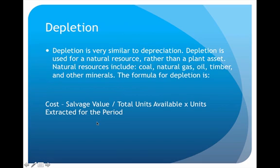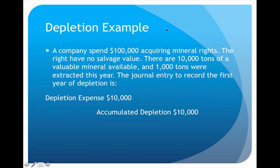To see this in an actual example: a company spends one hundred thousand dollars to acquire mineral rights — that's a natural resource — and it has no salvage value, which is common for natural resources. They estimate there are ten thousand tons of a very valuable mineral to extract and sell. In the current year they have already extracted one thousand tons. To calculate depletion: cost of one hundred thousand, no salvage value, divided by ten thousand total tons, times the one thousand tons extracted this year.